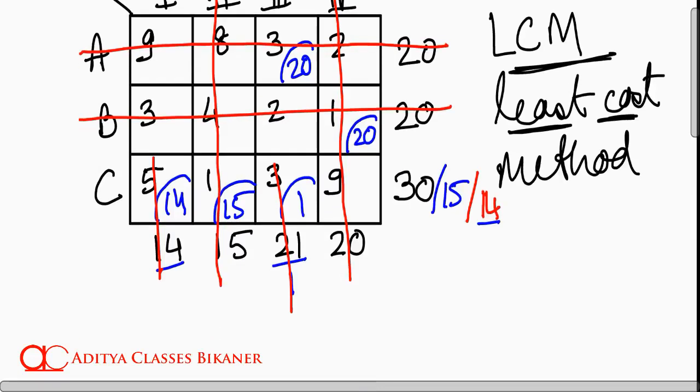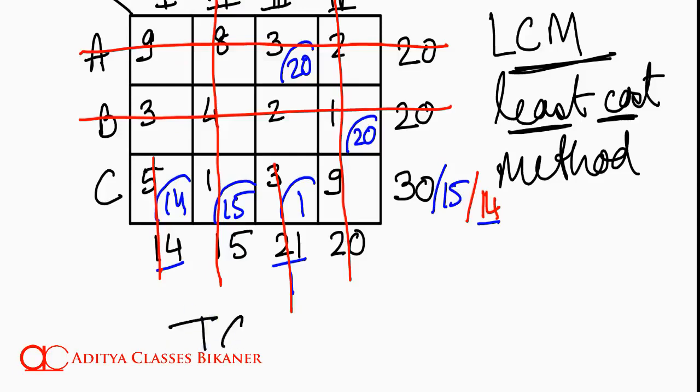Now, what is the result of this assignment? How do I know if this was good or not? For the purpose, let me calculate total cost at this point of time. Then, I will calculate total cost at different stages after optimization. For now, let me calculate total cost at this particular point of time. How much is the total cost? See, I transported 20 units at 3 rupees per unit. So, it cost me how much? 20 multiplied by 3.